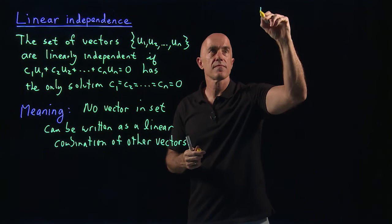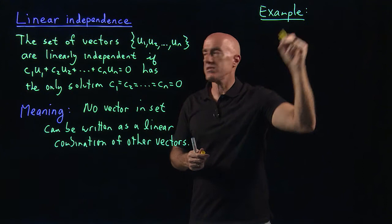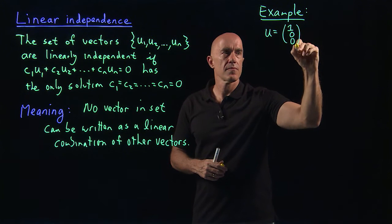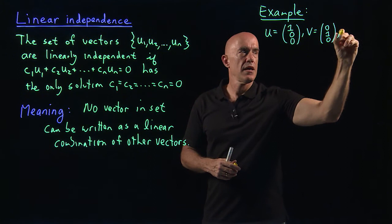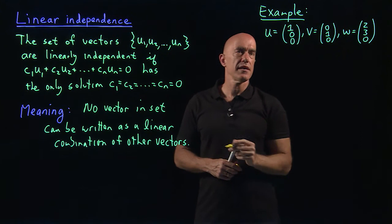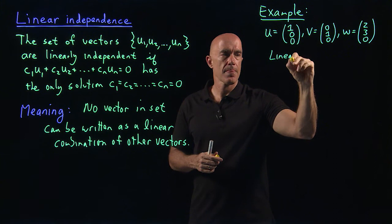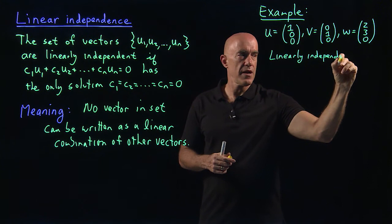So, let's look at the first example. Let's look at three vectors. So, we have U equals (1, 0, 0). V equals (0, 1, 0). And W equals (2, 3, 0). So, the question would be, are these three vectors linearly independent? So, the question is linearly independent?